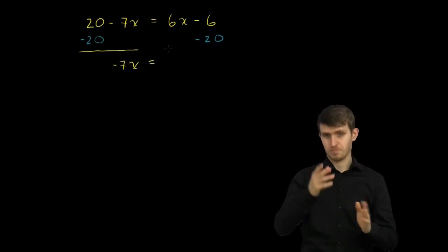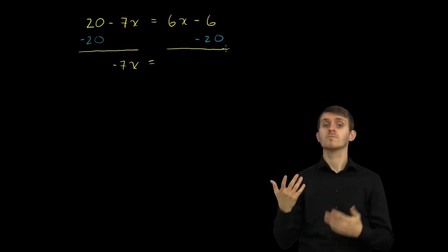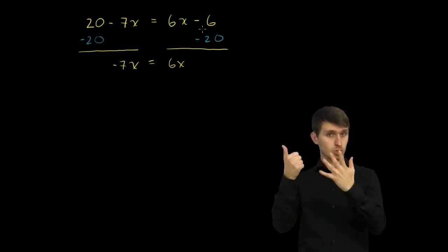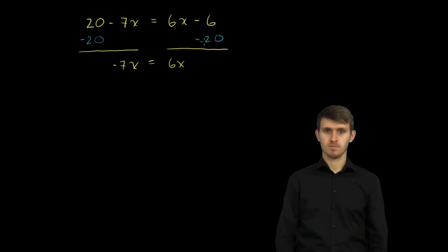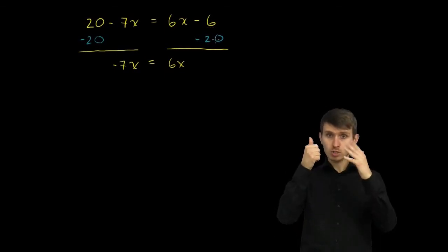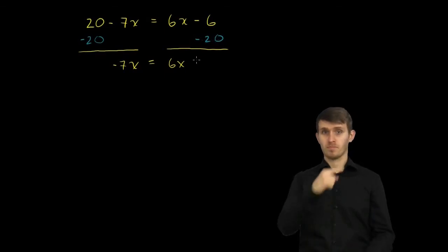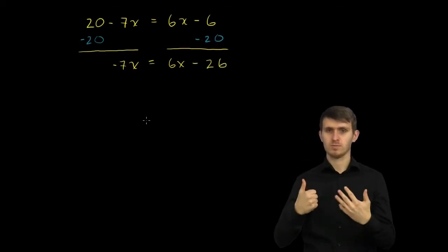And that is equal to the right-hand side of the equation. I have a 6x. I'm not adding or subtracting anything to that. But then I have a negative 6 minus 20. So if I'm already 6 below 0 on the number line and I go another 20 below that, that's at negative 26.